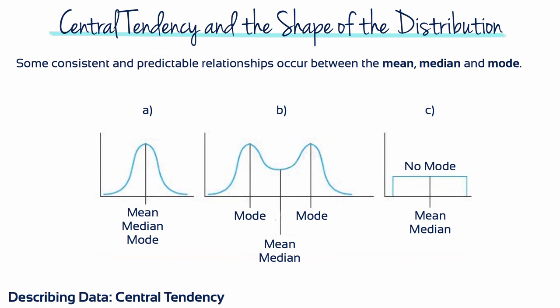For a perfectly symmetrical distribution with one mode, all three measures of central tendency, the mean, the median and the mode have the same value. A bimodal distribution that is symmetrical will have a mean and median together in the center, with modes on each side. A rectangular distribution has no mode because all the scores occur with the same frequency.